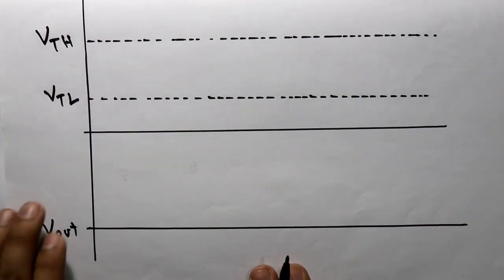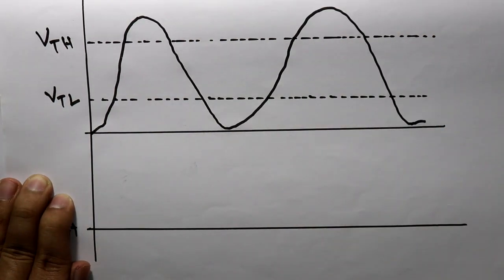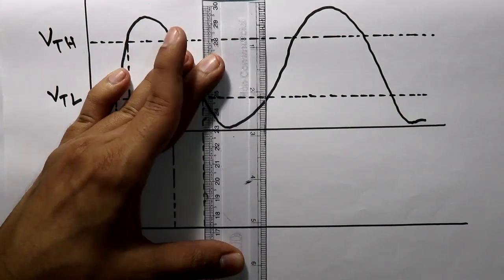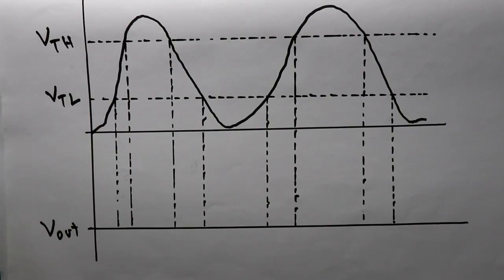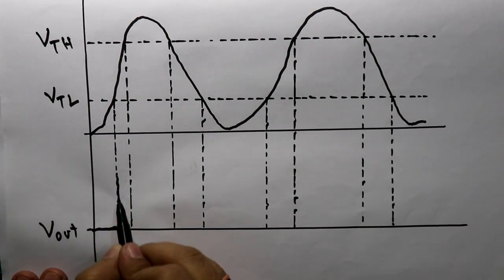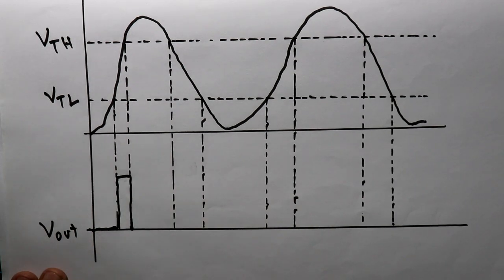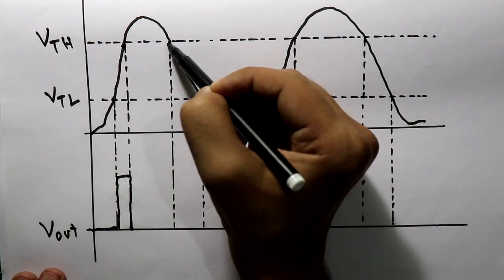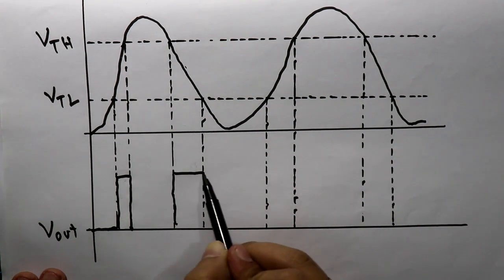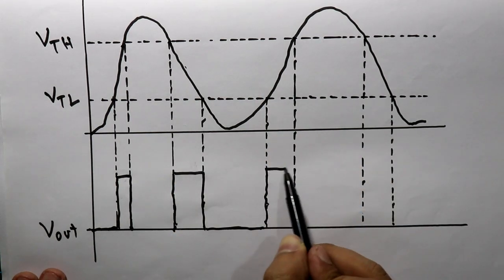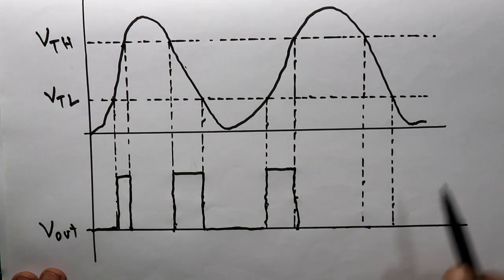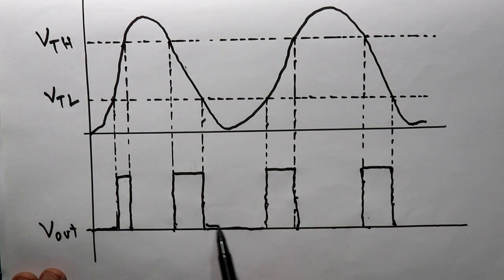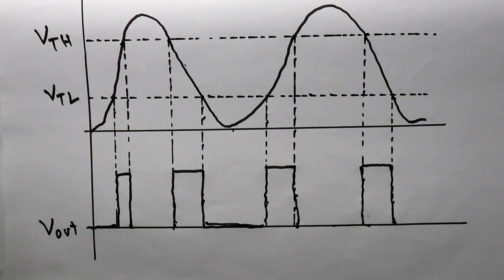Here we have V_out and the input signal, along with V_TH and V_TL. We are giving an input signal like this. Only the portion where the input voltage falls between V_TL and V_TH will have a high output — only those portions. This portion is low because it is higher than V_TH, and this portion is also low because it is lower than V_TL.